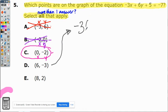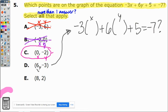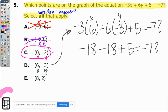So -3x + 6y + 5 = -7 question mark, and our x is the number 6 and our y is -3. -3 times 6 is -18. Positive 6 times -3 is also -18 plus 5. Does that equal -7?